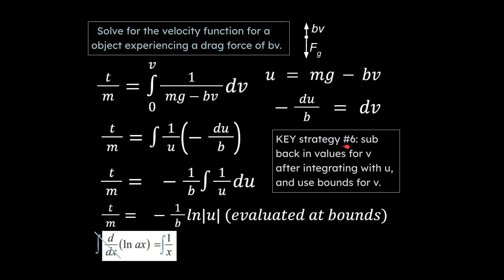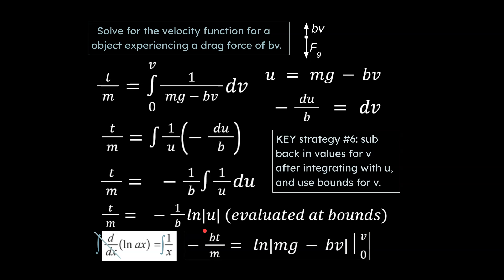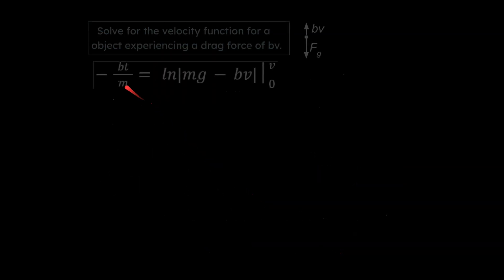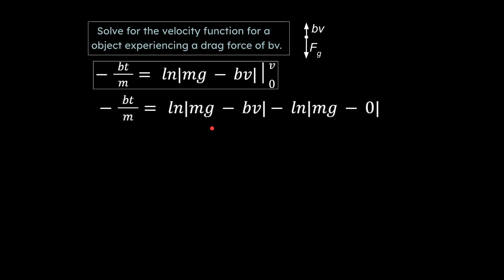Our key strategy number six is to substitute back in values for v. After doing the integration in terms of u, we go back and substitute u back in terms of v. So instead of ln of u, we have ln of mg minus bv. We defined u as equal to that expression, so we put it back in and we're ready to evaluate. Now we put in our bounds in terms of v values — from zero to whatever value of v we're looking at — and we take this equation forward.